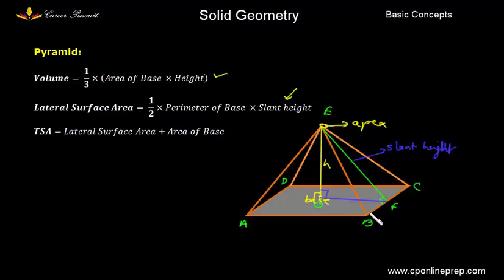So using this right angle triangle we can get the value of slant height in terms of the height and the dimension of the base. Now total surface area will be - since it has only one flat surface area that is the base - we will be adding lateral surface area plus the area of base. So these are the three important formulas for pyramid.